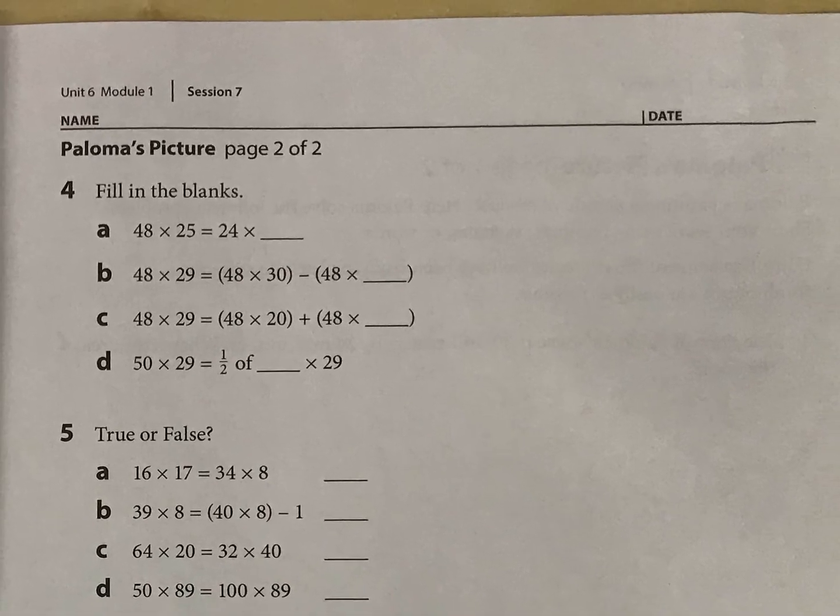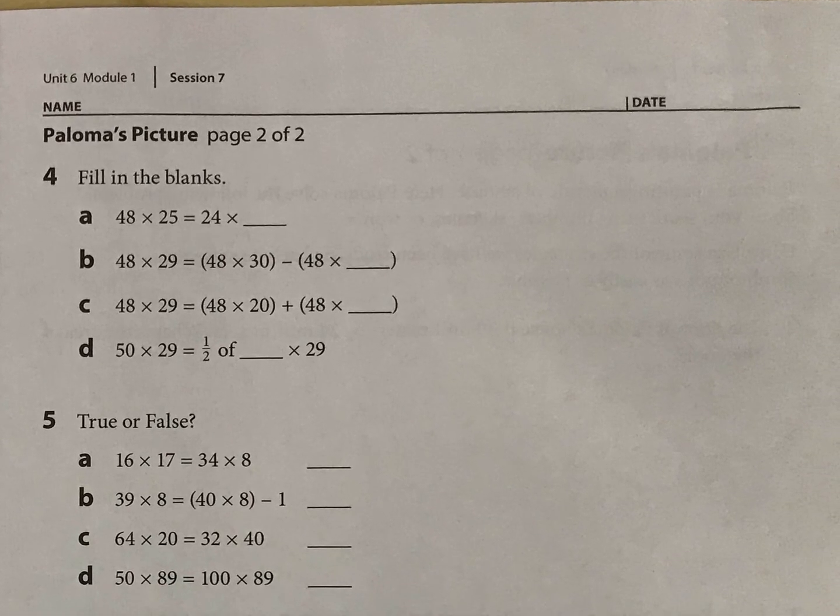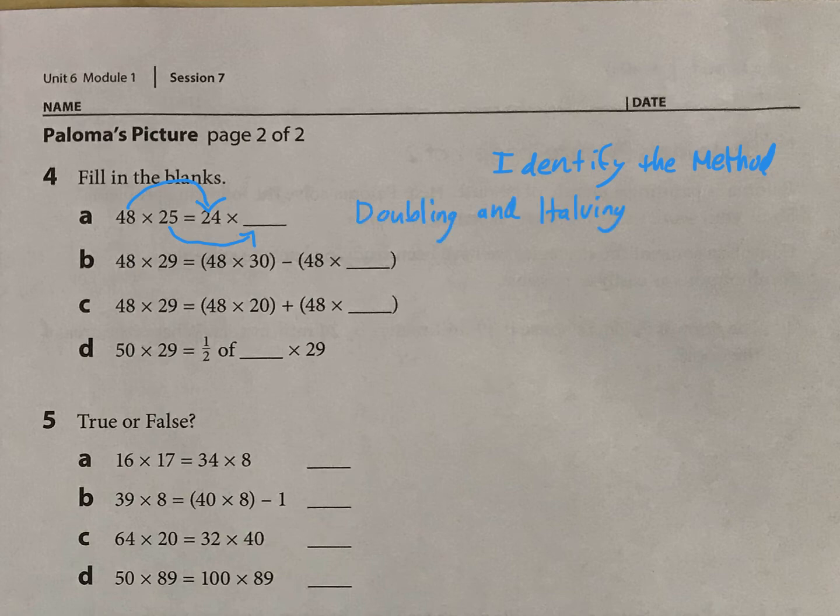And then here, what I'd like you to also do as you fill in these blanks, or do the true or false, is also identify the method that's happening here. So look here, you have 48 becoming 24, so what would 25 become? The method here is doubling and halving, right? That's going to figure out what they're doing here.